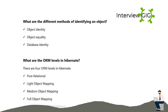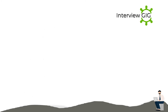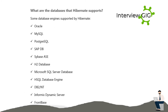What are the ORM levels in Hibernate? There are 4 ORM levels in Hibernate: pure relational, light object mapping, medium object mapping, and full object mapping.